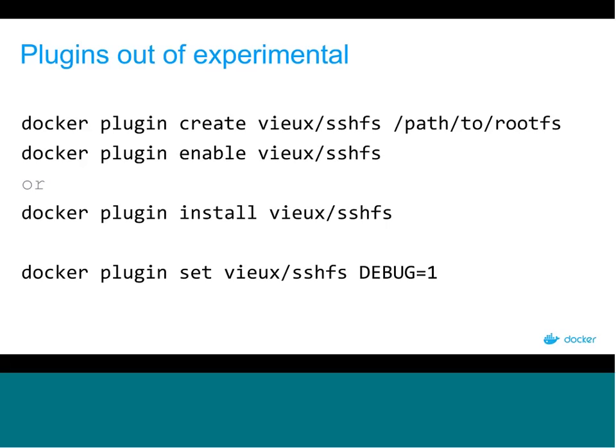Let's talk about plugins — one of the biggest new features of 1.13. We redesigned the whole plugin system for Docker in 1.13. This work started in 1.12 where it was experimental; now in 1.13 it's stable. These plugins are managed by Docker — their lifecycle is managed by Docker. You install the plugin through Docker, Docker starts the plugin, makes sure it's running, and if something happens it restarts the plugin automatically. Plugins are also distributed via the registry and Docker Hub.